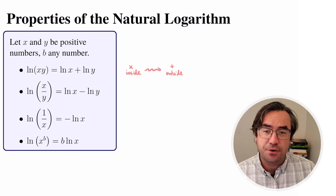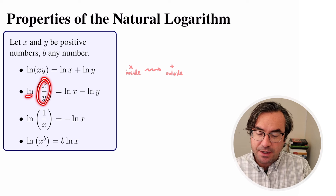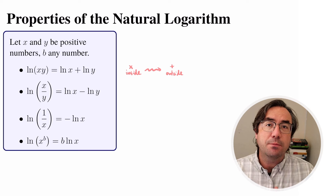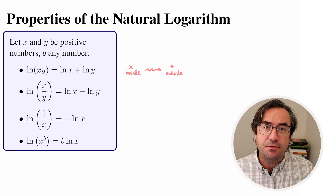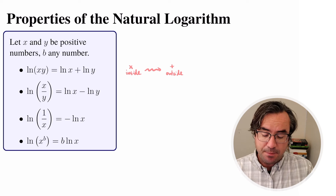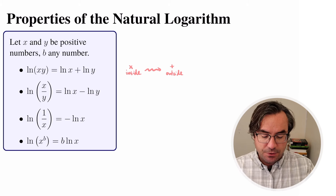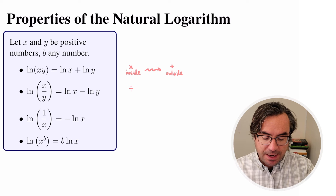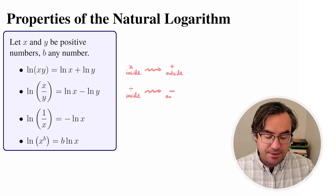We also have a property for division. So if we have the natural log of x divided by y, we can break that apart and write it as natural log of x minus the natural log of y. So if we have division going on inside our log function, that becomes subtraction outside the log function.